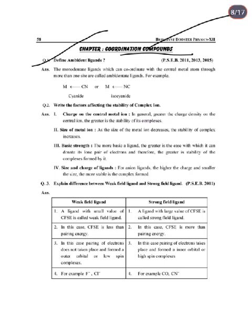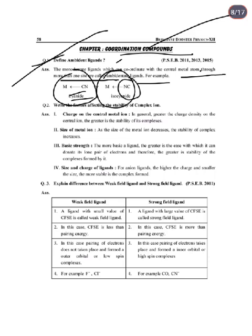Next chapter: Coordination Compounds. Define ambidentate ligand. An ambidentate ligand is a monodentate ligand which can coordinate with the central metal atom through more than one site. For example, cyanide (CN⁻) can coordinate through carbon or nitrogen, and isocyanide. These are examples of ambidentate ligands.